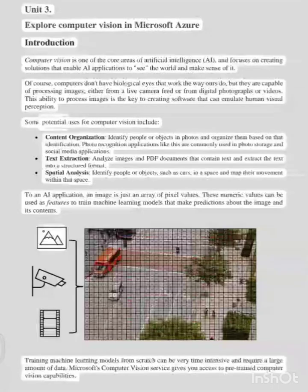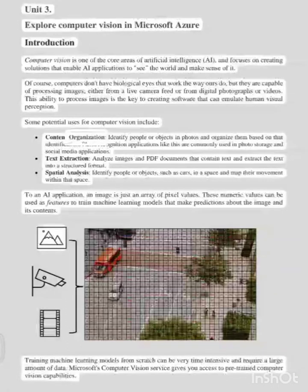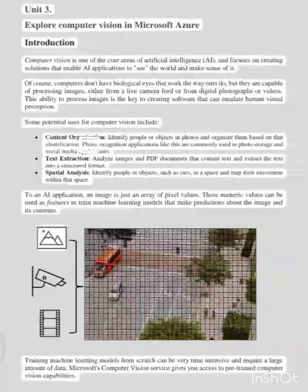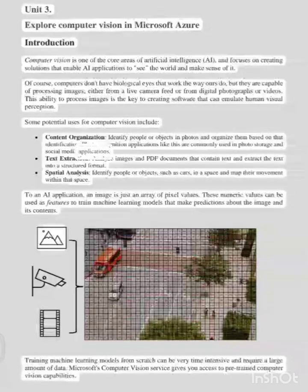Some potential uses for computer vision include content organization: identify people or objects in photos and organize them based on that identification. Photo recognition applications like this are commonly used in photo storage and social media applications.